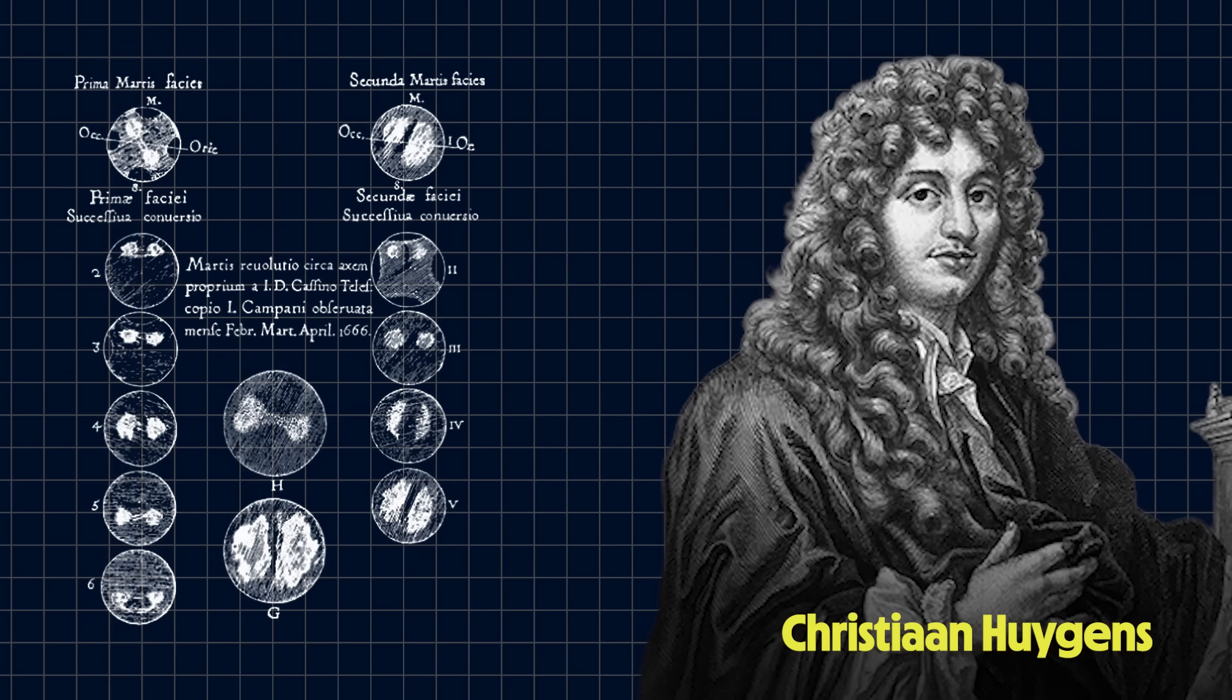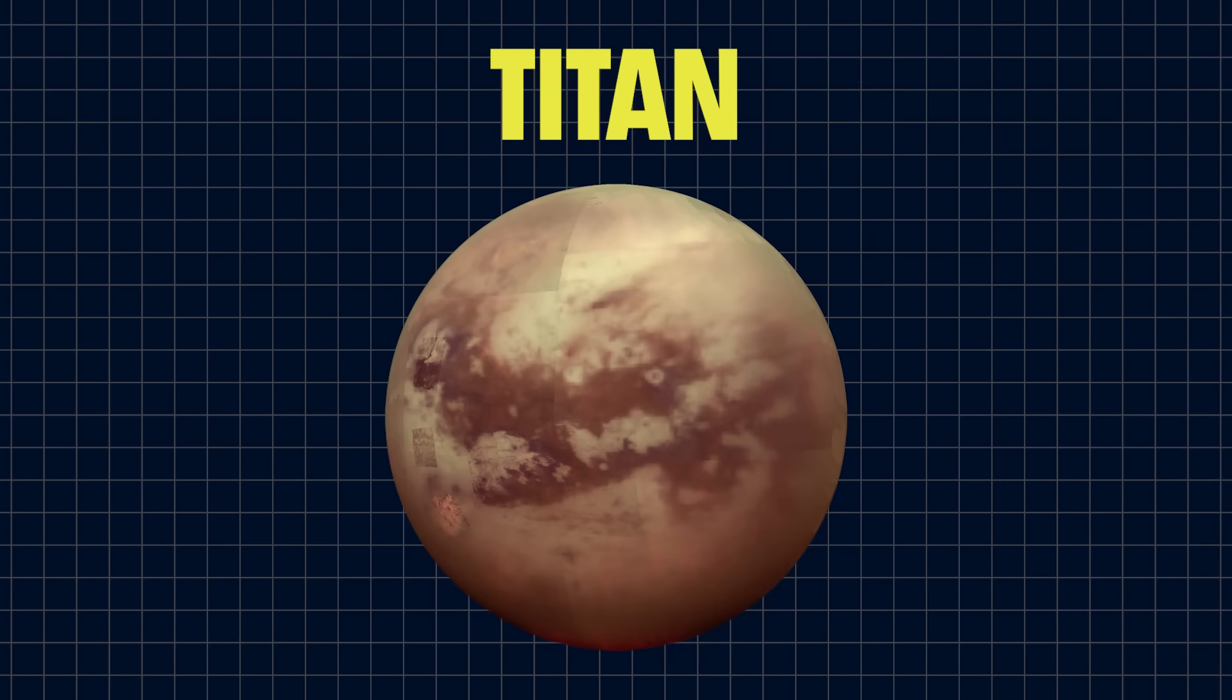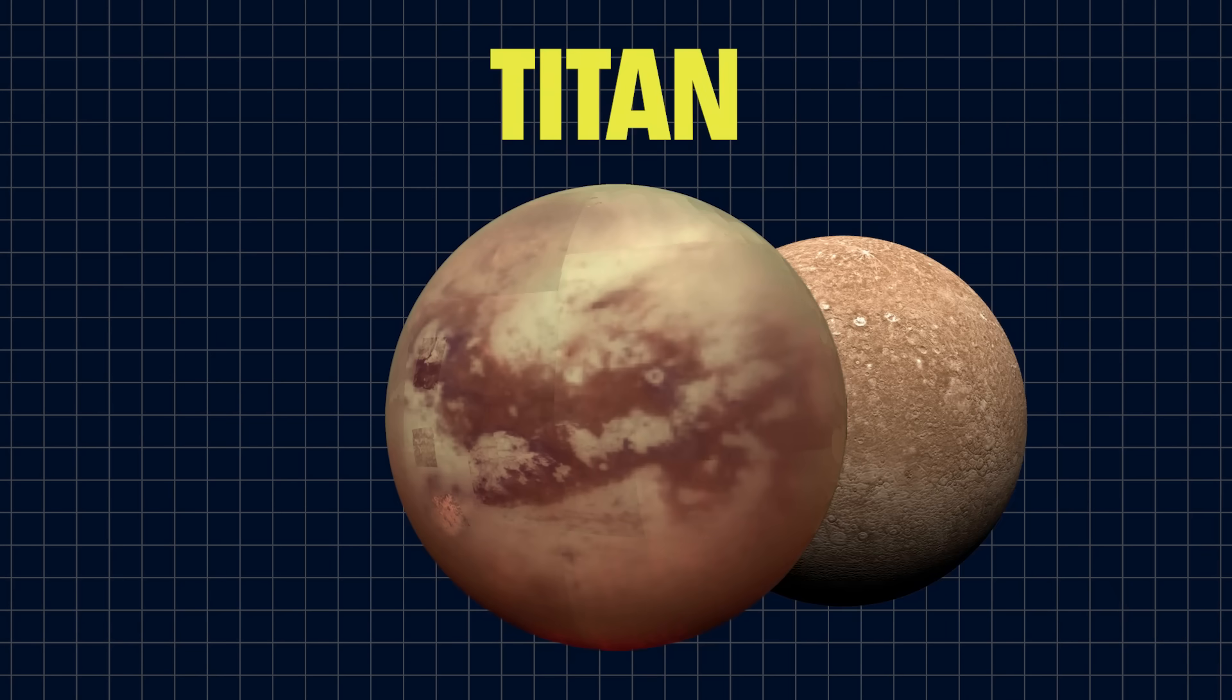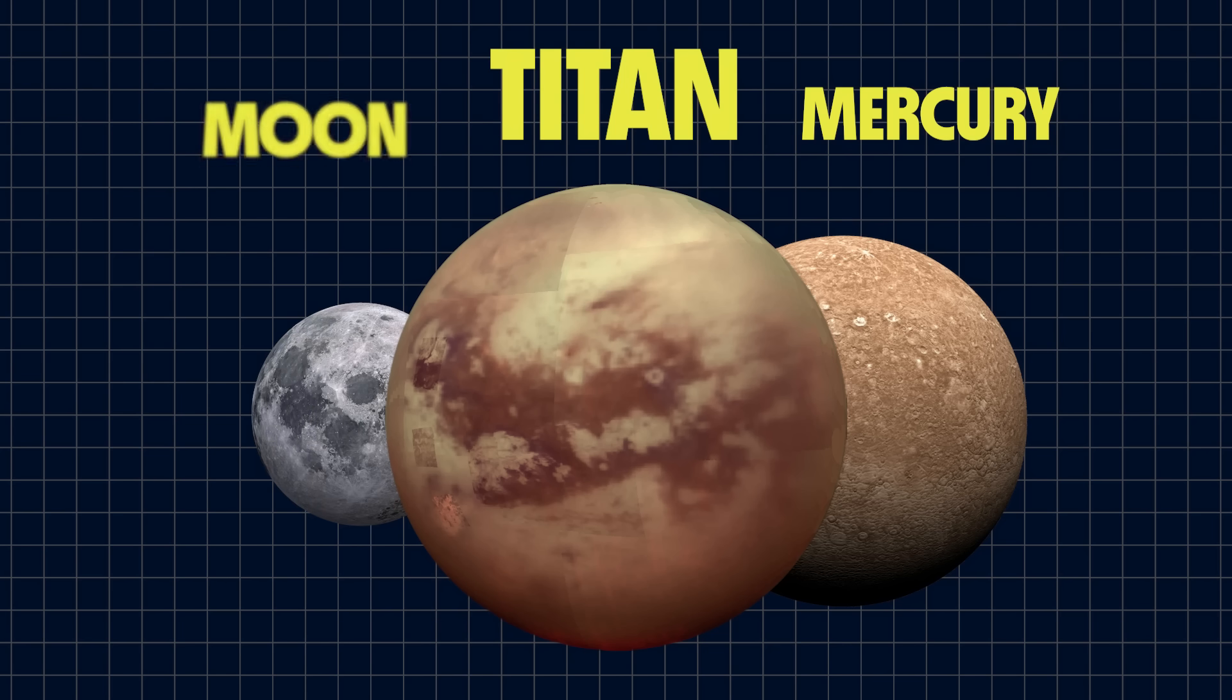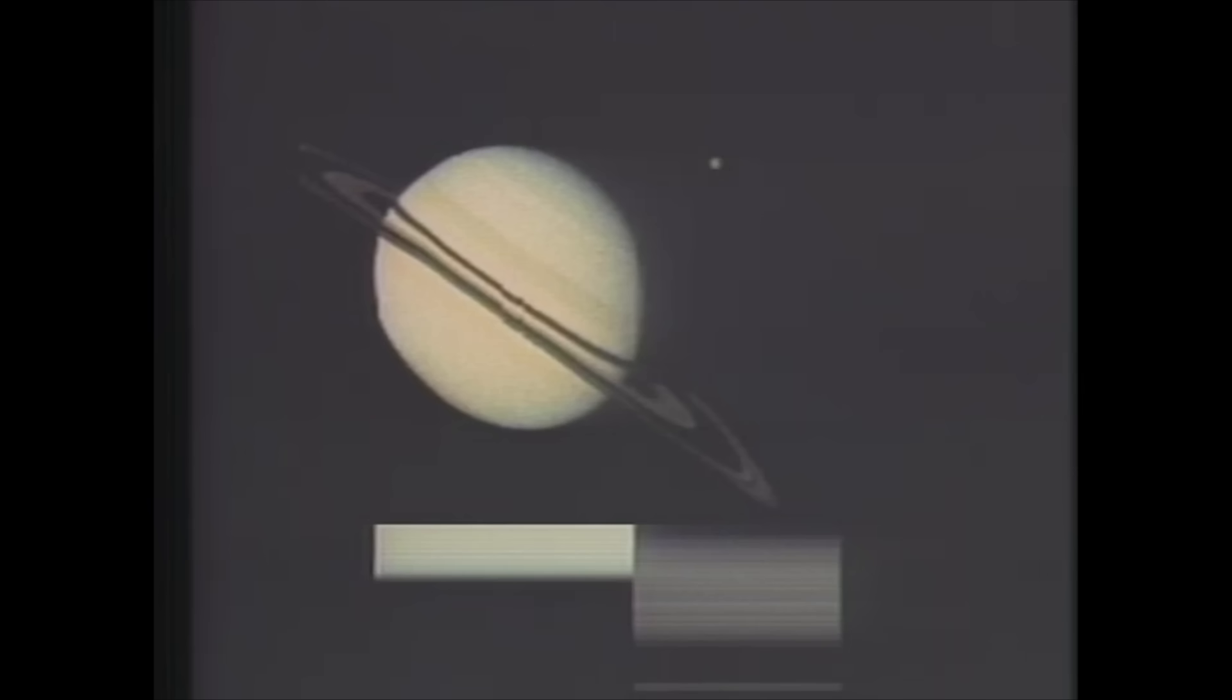It's not hard to spot either, as you can probably tell by the name. Titan is big. It's actually a bit larger than the planet Mercury, and it's 50% wider than our own moon, but it's still incredibly far away. So when Pioneer 11 first encountered Titan, scientists were eager to find out what it actually looked like.